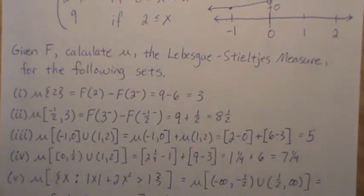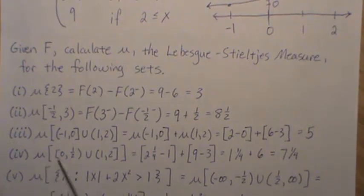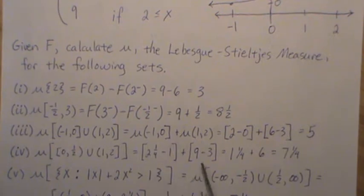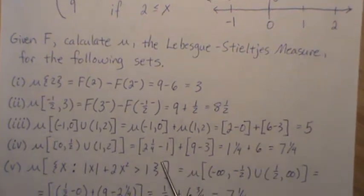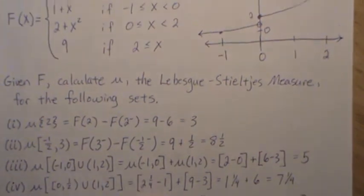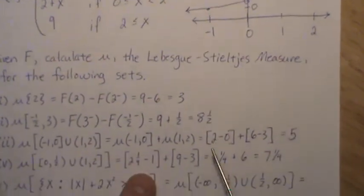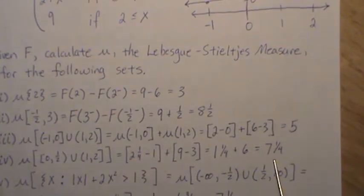Very similarly, the measure of the union of these two intervals is the sum of the two measures. I'll just show the values and let you go back and calculate these on your own time. The answer is 7 and 1/4.